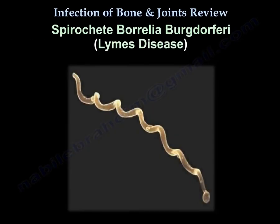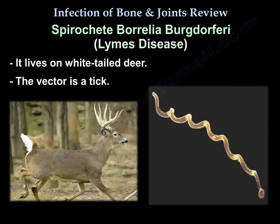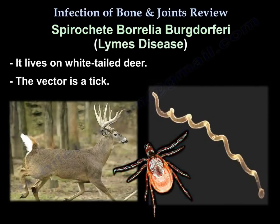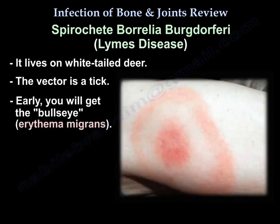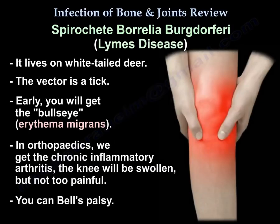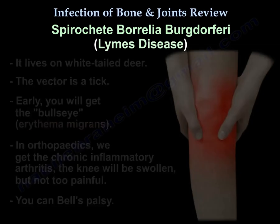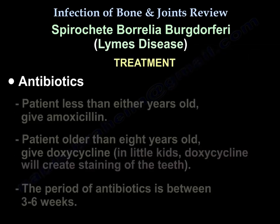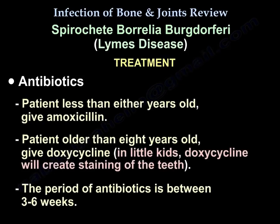Lyme disease is caused by the spirochete Borrelia burgdorferi, which lives on white-tailed deer; the vector is a tick. Early on you will get the bull's-eye rash, erythema migrans. In orthopedics, we see chronic inflammatory arthritis — the knee will be swollen but not too painful. Bell's palsy can also occur. Treatment is antibiotics: amoxicillin for children under eight, and doxycycline for those over eight, because doxycycline causes staining of the teeth in young children. The antibiotic course is three to six weeks.